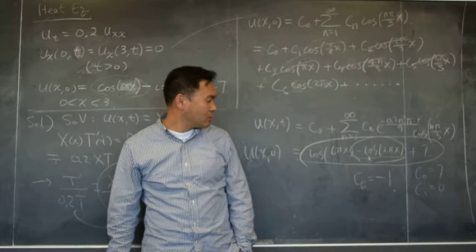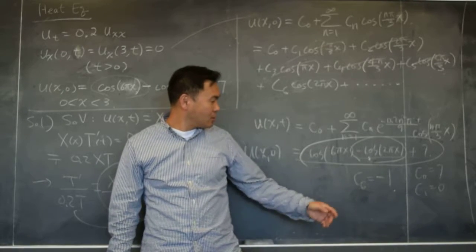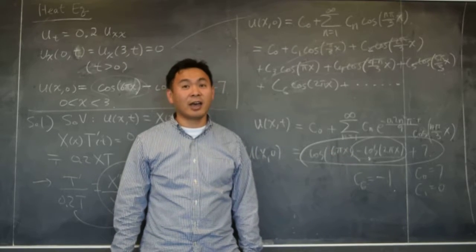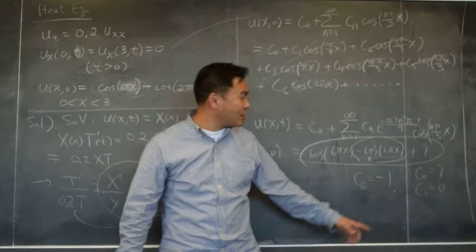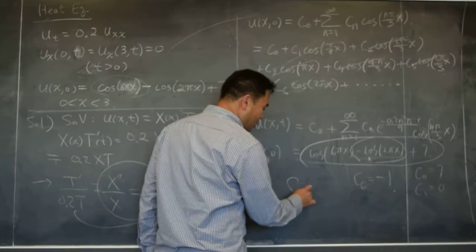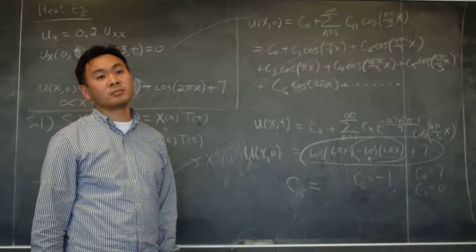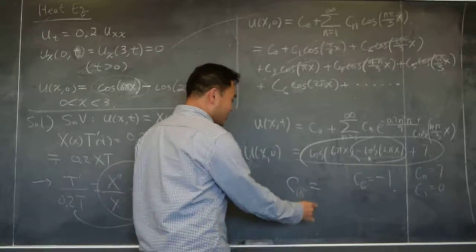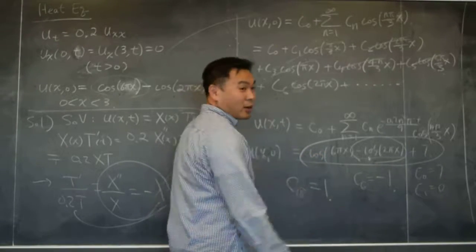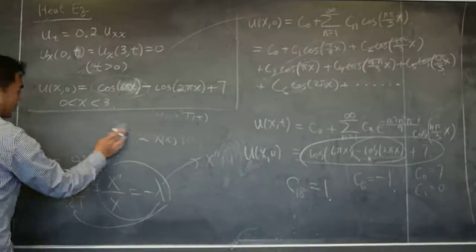Now what's the next one that's not 0? I need cosine of 6πx. 18. When n is 18, 18π/3 gives you 6π, right? So C_18 should be what? Positive. Yeah, it would be positive 1, because that's positive 1 times this. And everything else should be 0, right?